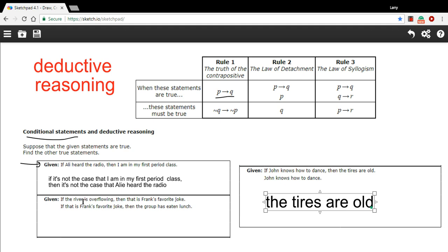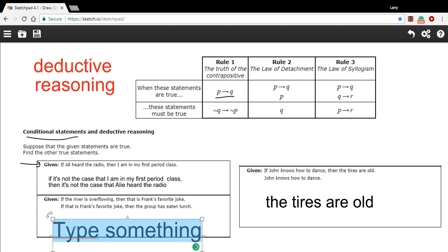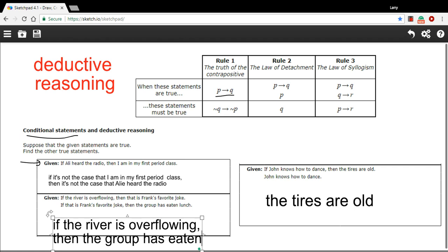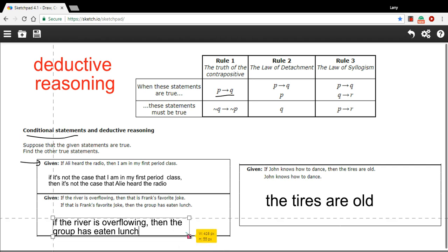So we can say: if the river is overflowing, then the group has eaten lunch. So that is the law of syllogism, and that's a little bit of work with deductive reasoning with conditional statements.